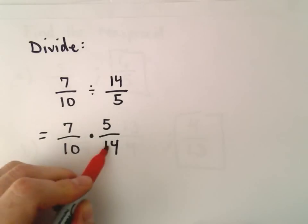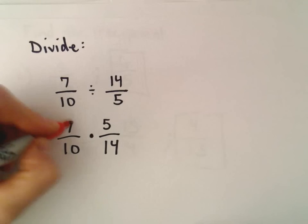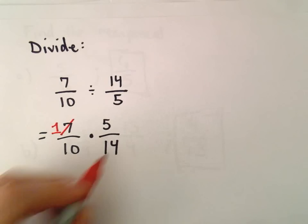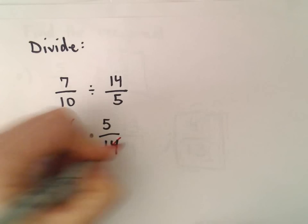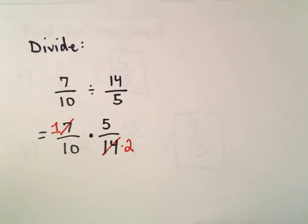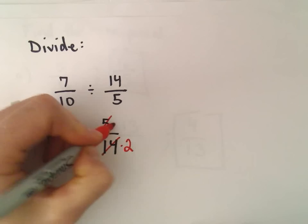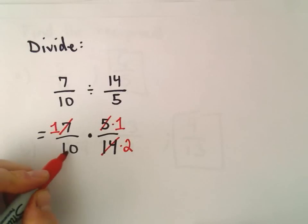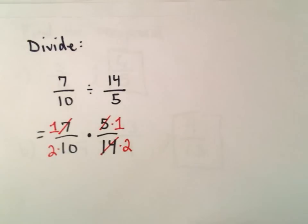So if I look at 7 and 14, 7 goes into both of those numbers. 7 divided by 7 would leave me with a 1. 14 divided by 7 would leave me with 2. And then we can do the same thing with the 5 and the 10. 5 divided by 5 would be 1. And 10 divided by 5 would leave us with 2.